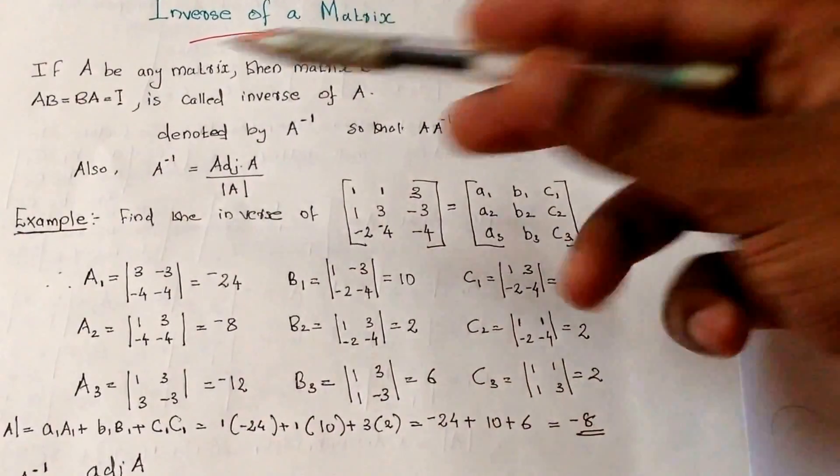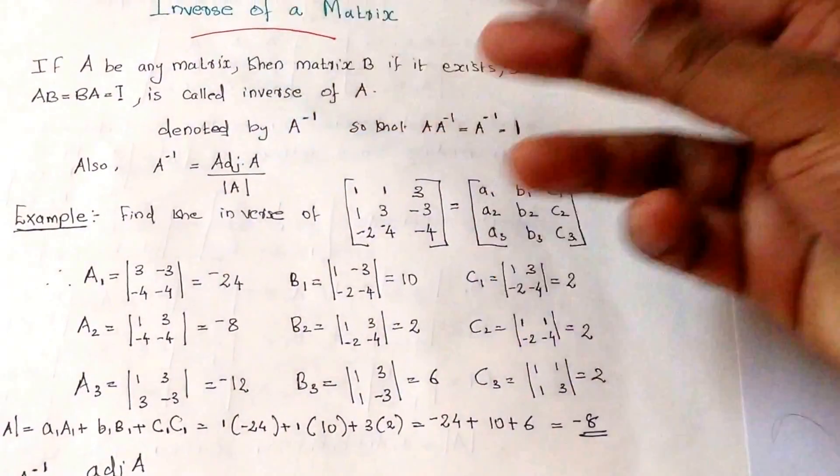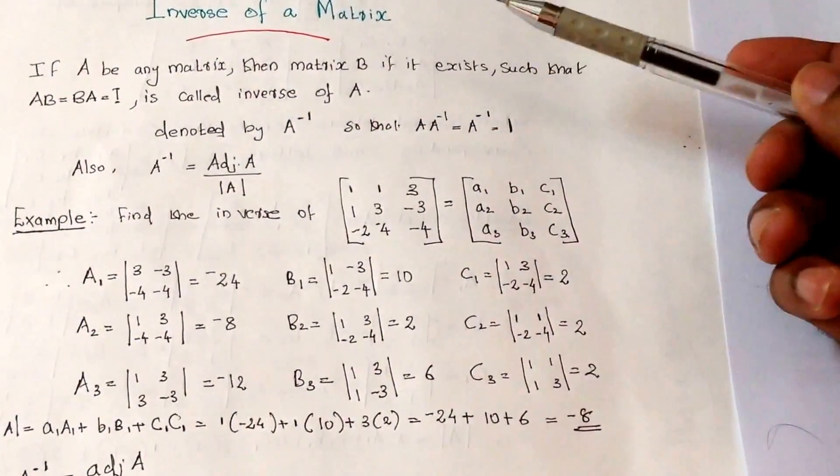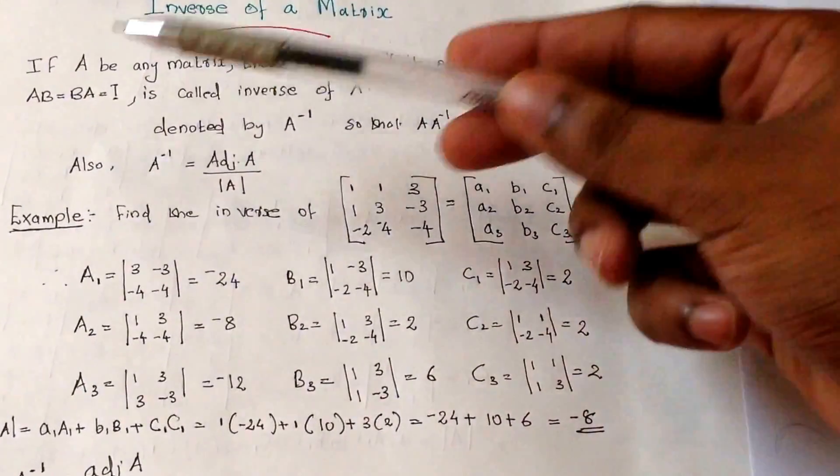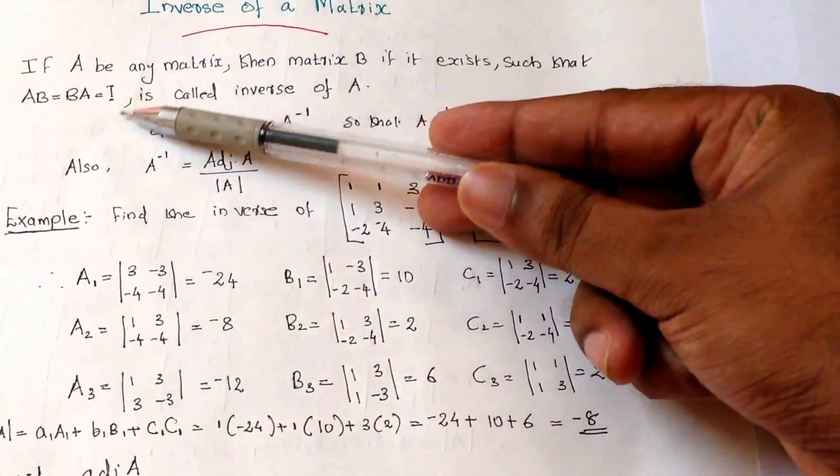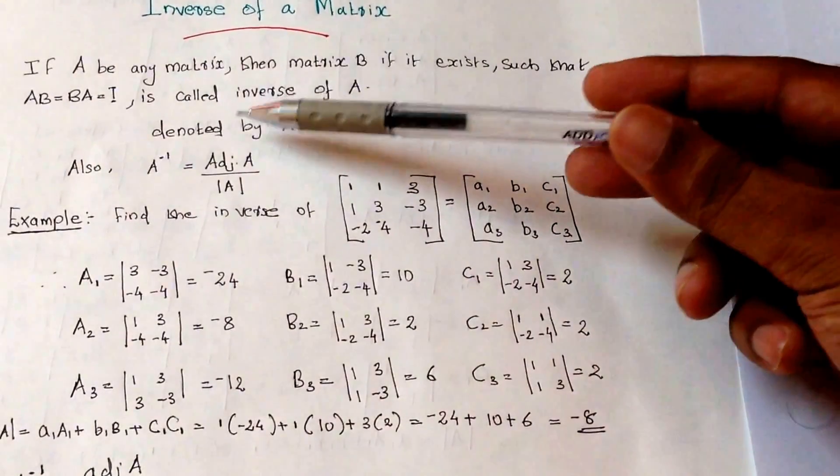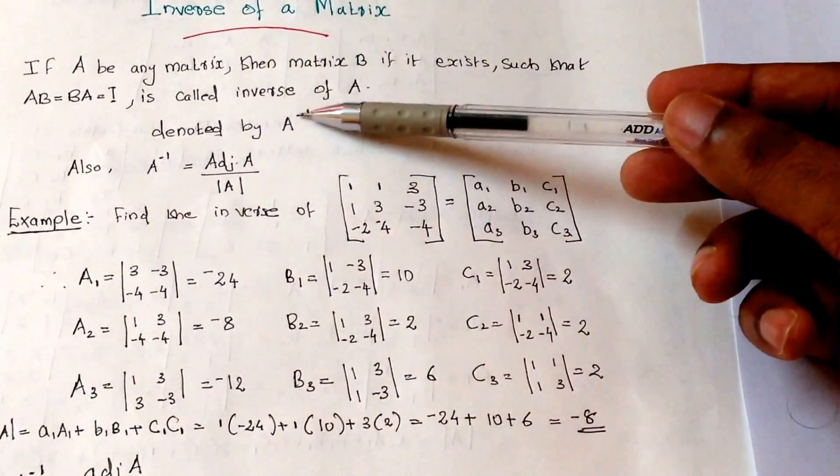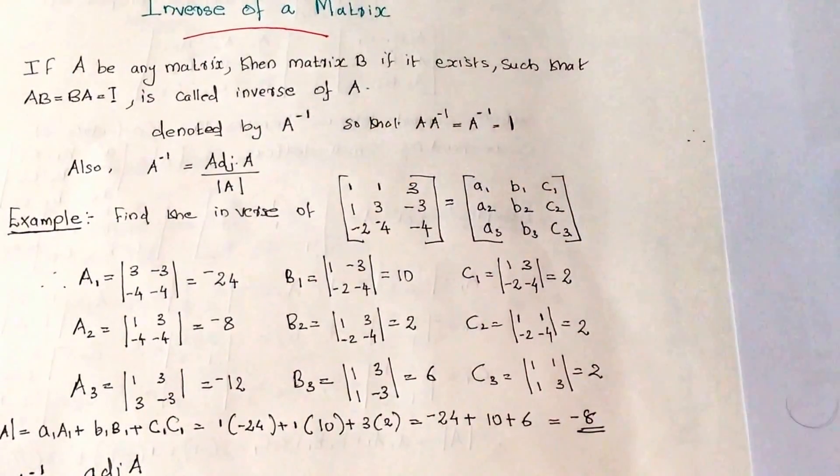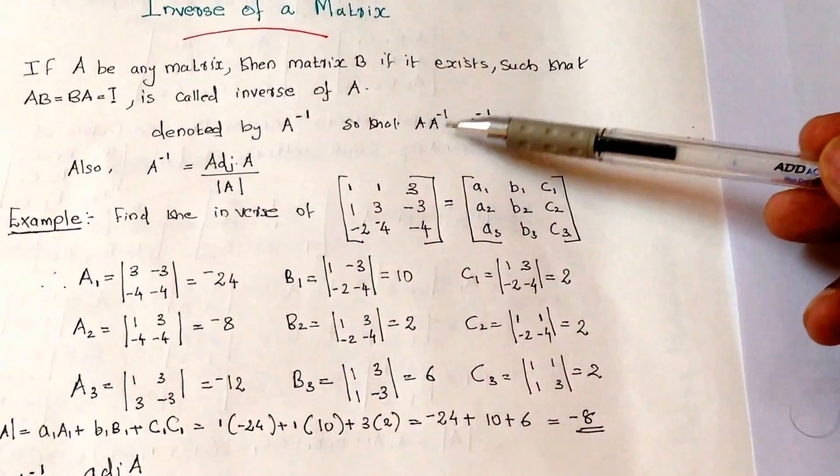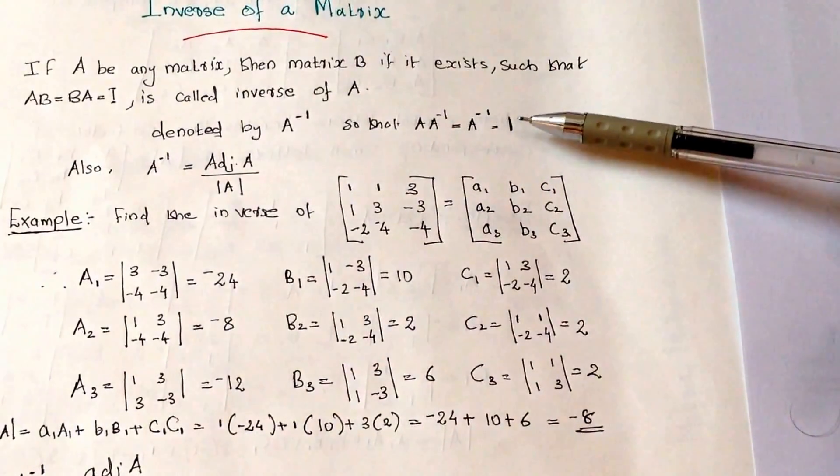If A be any matrix, then matrix B, if it exists such that AB equals BA equals I, is called inverse of A. The inverse is denoted by A inverse, so that A times A inverse equals A inverse times A equals I.